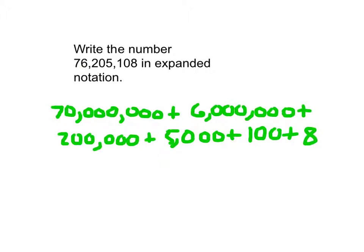I look it over again. I should have 1, 2, 3, 4, 5, 6 addends. 1, 2, 3, 4, 5, and 6 addends. The 8 goes with the 8. 100, 100, 5, 5,000, 200,000, 6,000,000, 70,000,000. Right?